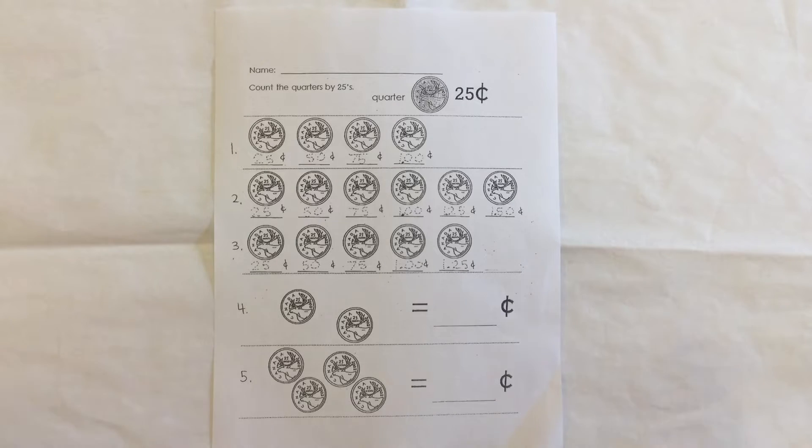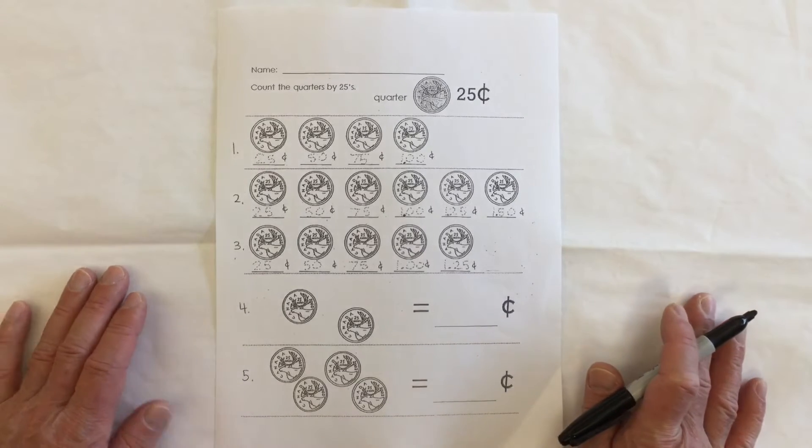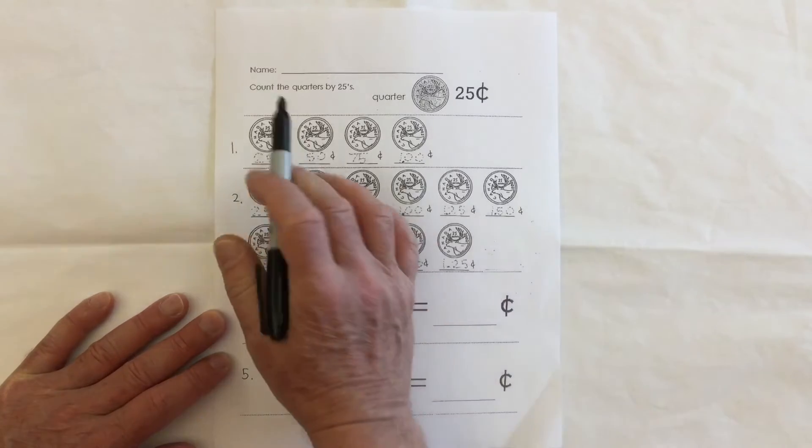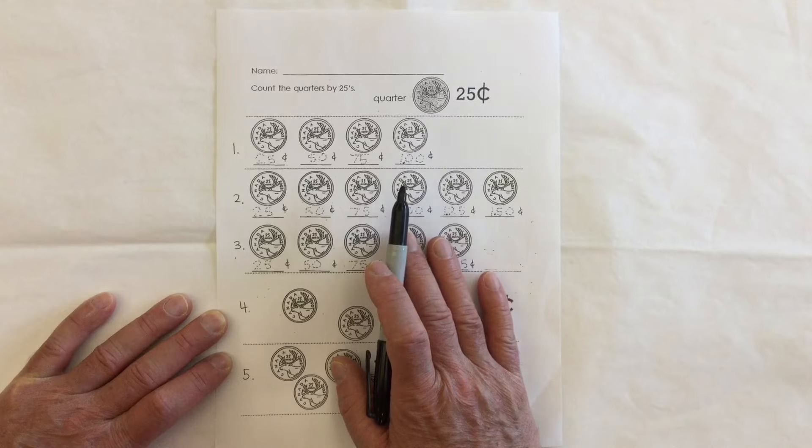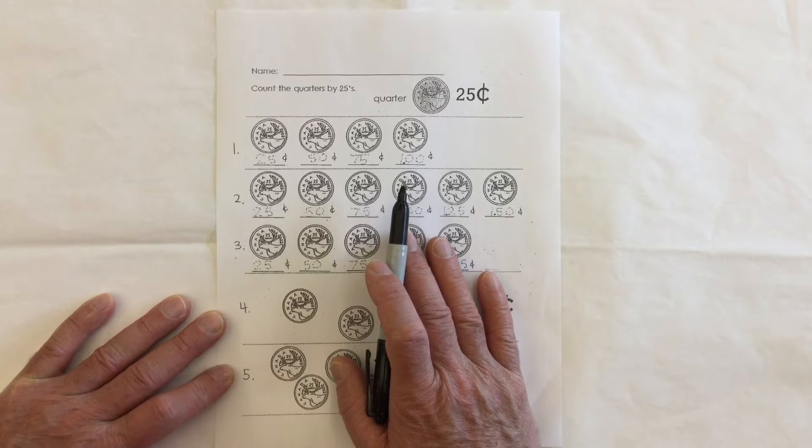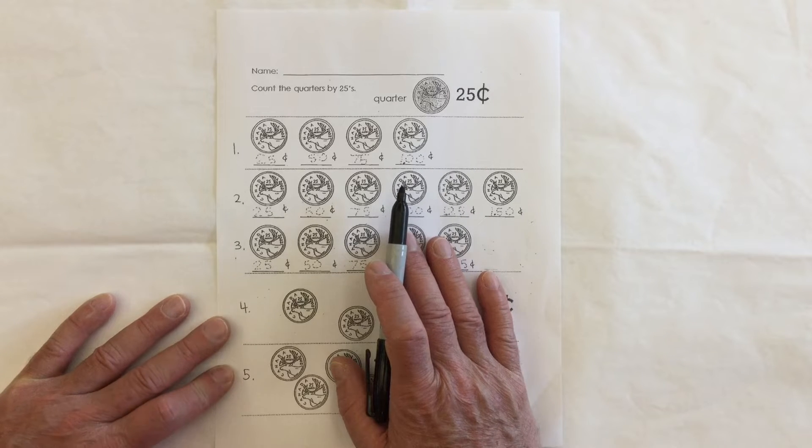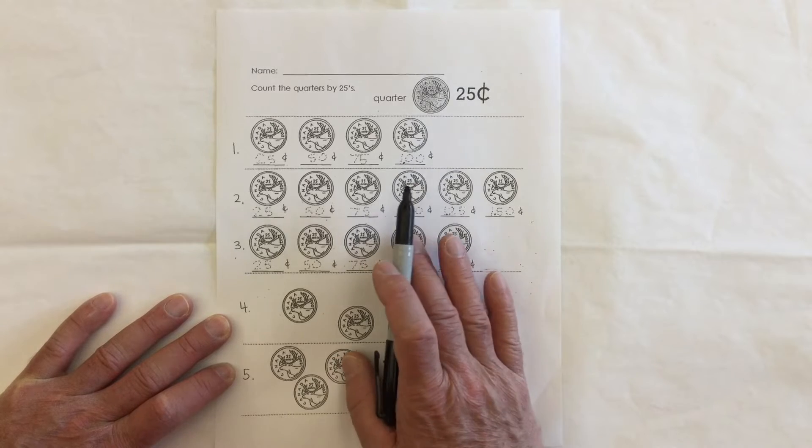So here we have a math worksheet for our theme unit on Canadian money and we're looking at the quarter. It says count the quarters by 25. So I know it seems weird, we learn to count by ones and we learn to count by twos and skip count by fives and skip count by tens, but when it comes to quarters you got to skip count by 25s.